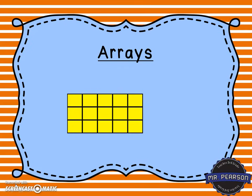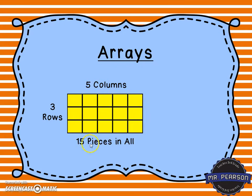Looking at this array, we have orange rectangles organized together. We have three rows and five columns, for a total of 15 pieces in all — five, ten, fifteen. So we write that as 3 times 5 equals 15, or three rows with five pieces in each row equals 15 pieces in all.